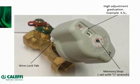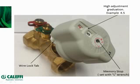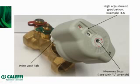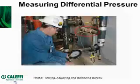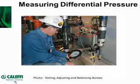Taking another look at the valve, in this example it's been set to 4.5, with a wire lock tab to prevent tampering. If the valve ever needs to isolate the rest of the system in the future, you can turn it down to isolate, and then back it off to the original setting without having to recalibrate — returning to the original flow rate.